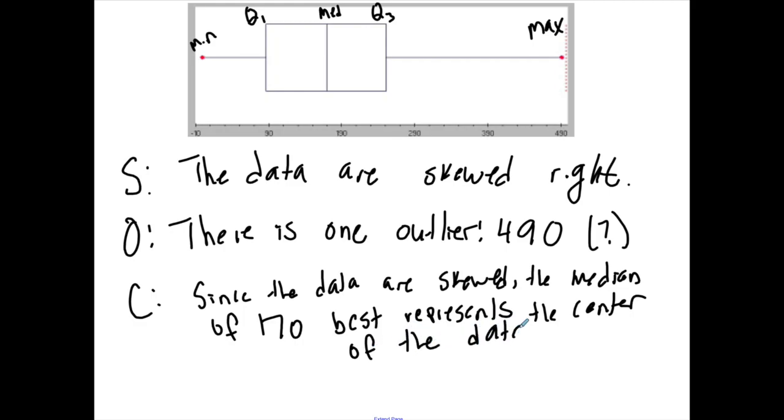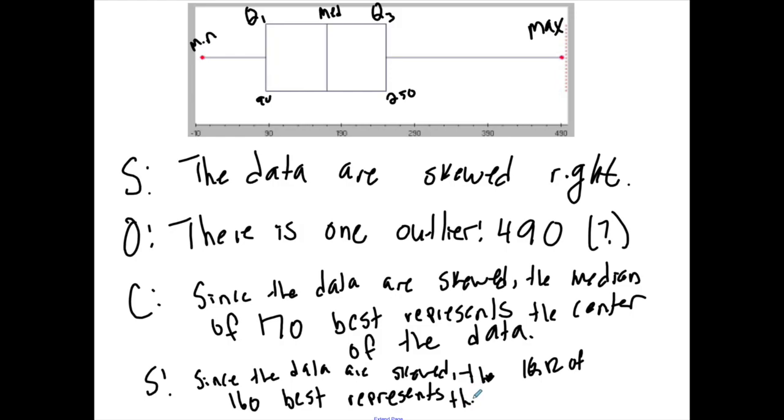Spread - so Q3 210, 230, 250, 90, so what that's going to mean is 160. Since the data are skewed, the IQR of 160 best represents the spread of the data.